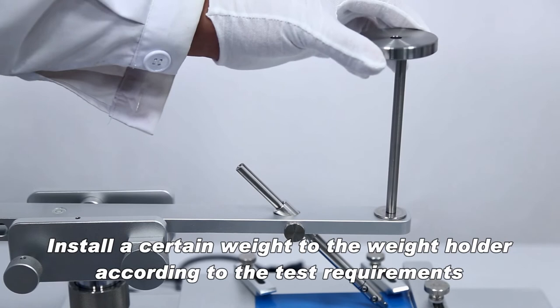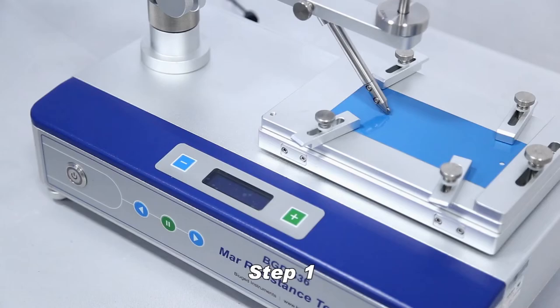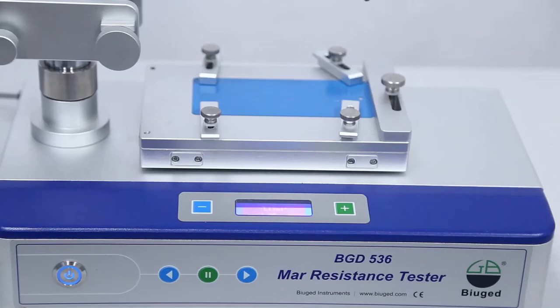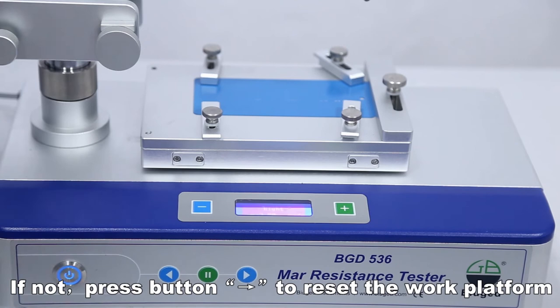Install a certain weight to the weight holder according to the test requirements. Turn on the power switch. Check if the work platform is at the far right; if not, press button to reset the work platform.